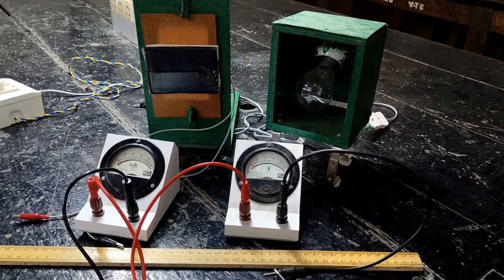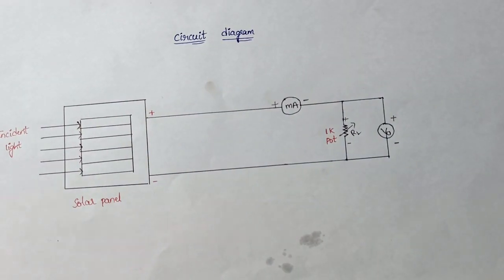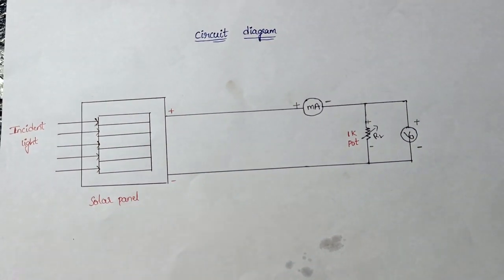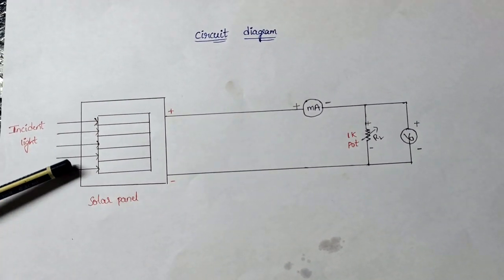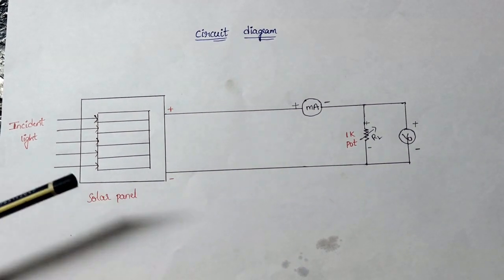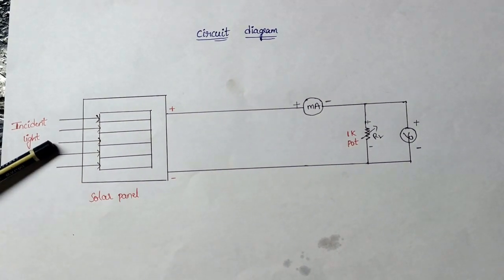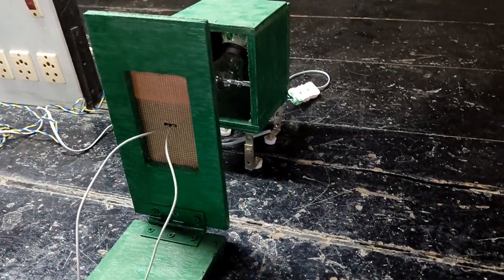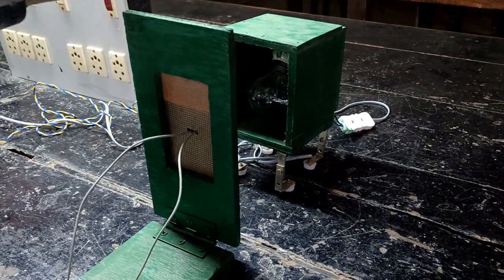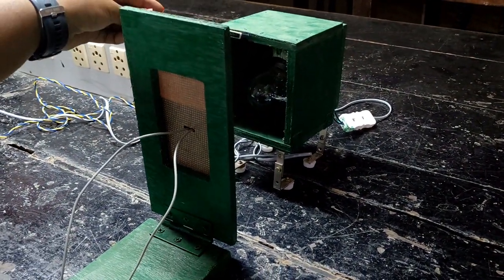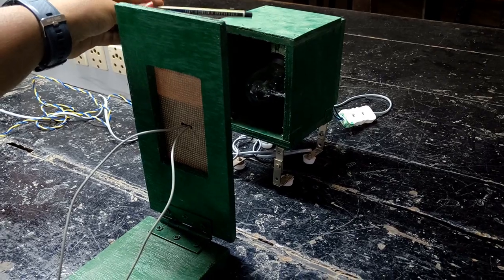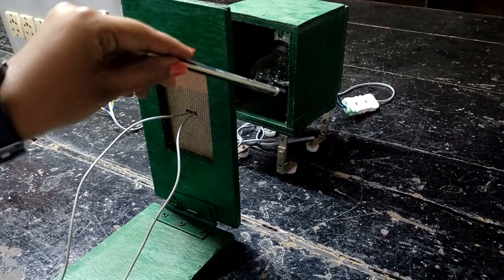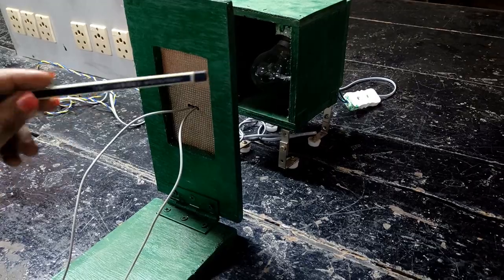Now let us look into the circuit connection. This is the circuit diagram of our experiment. As you can observe, our solar panel is placed in front of the incident light. This is our 100 Watt bulb, which acts as our incident light. This is the solar panel, placed opposite to the bulb.